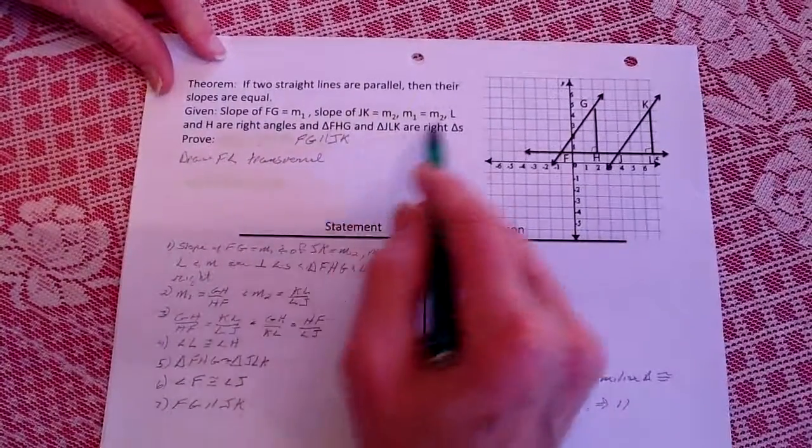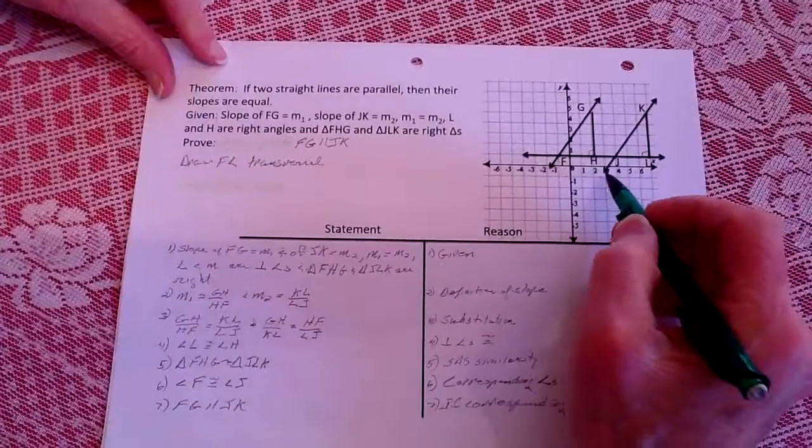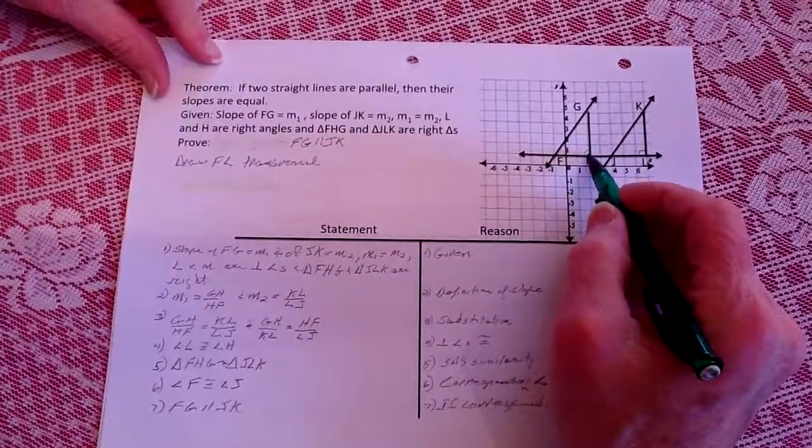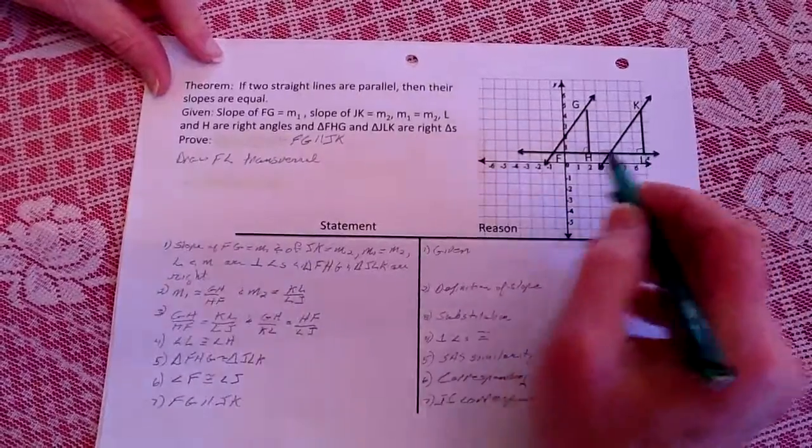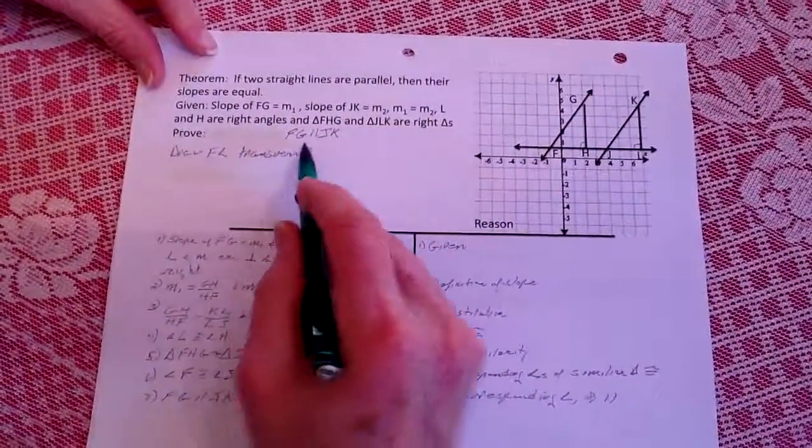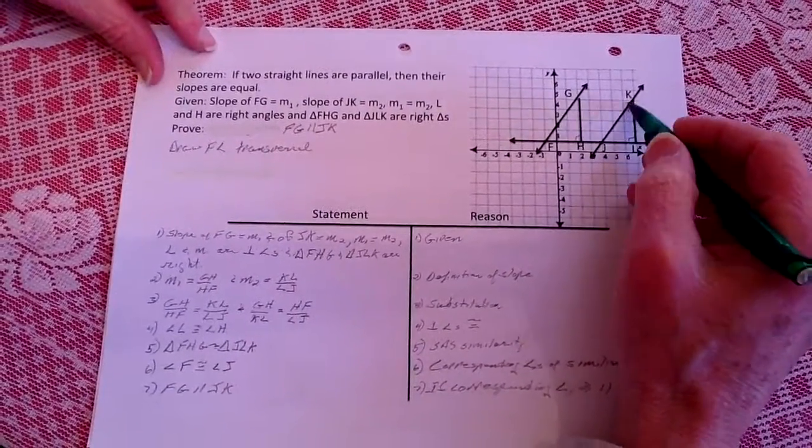And we're going to try to prove that these lines are parallel, and that L and H are right angles, and that these two triangles are right triangles. So we're going to try to prove that this line FG is parallel to JK.